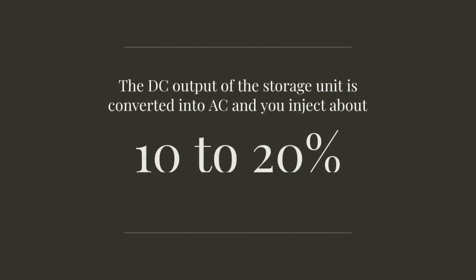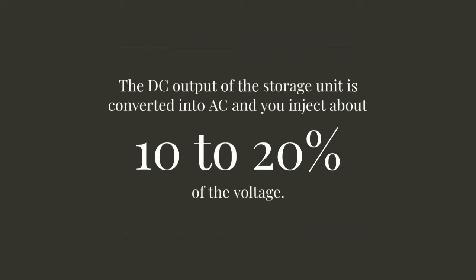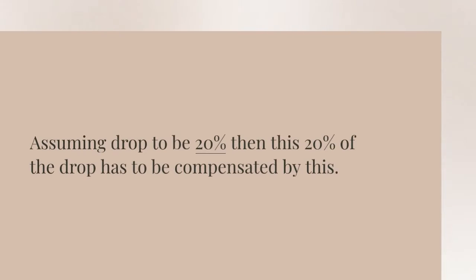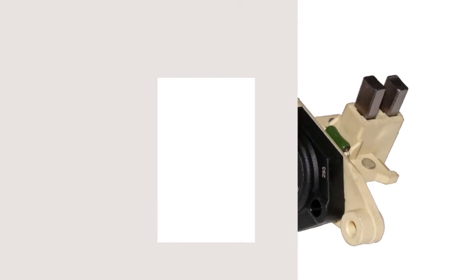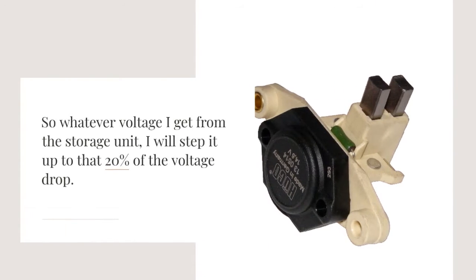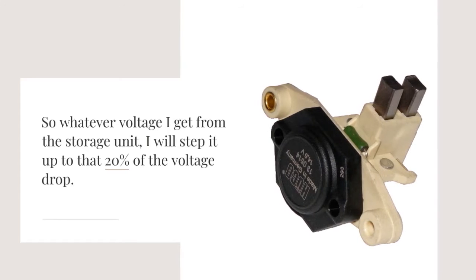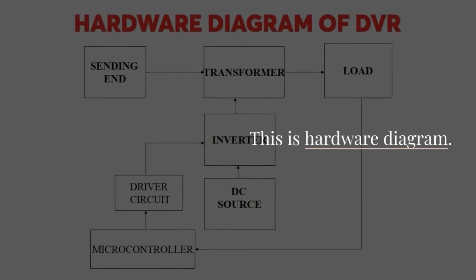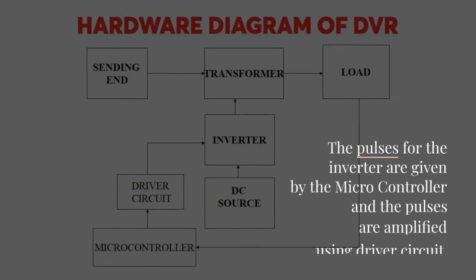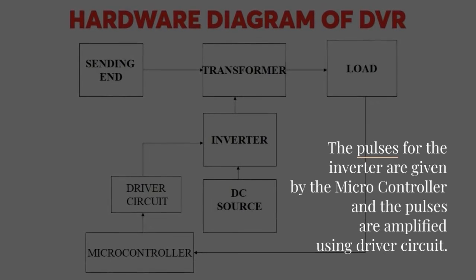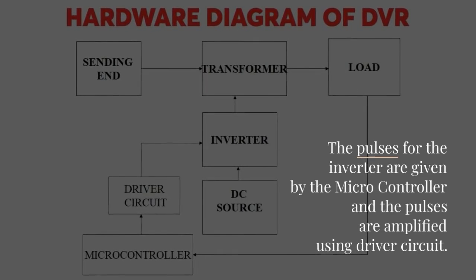The DC output of the storage unit is converted into AC and you inject about 10 to 20 percent of the voltage. Assuming drop to be 20 percent then this 20 percent of the drop has to be compensated. So whatever voltage I get from the storage unit I will step it up to that 10 percent of the voltage drop. This is hardware diagram. The pulses for the inverter are given by the microcontroller and the pulses are amplified using driver circuit.